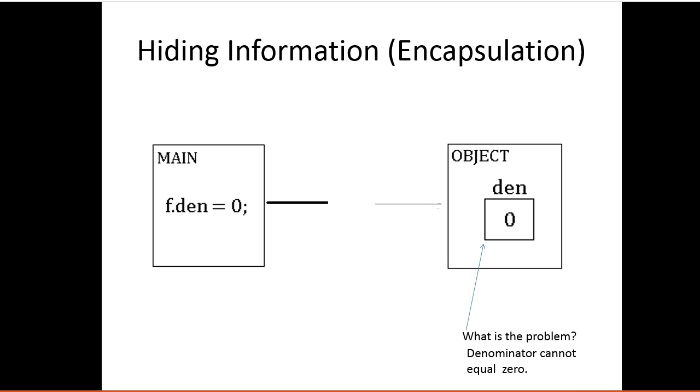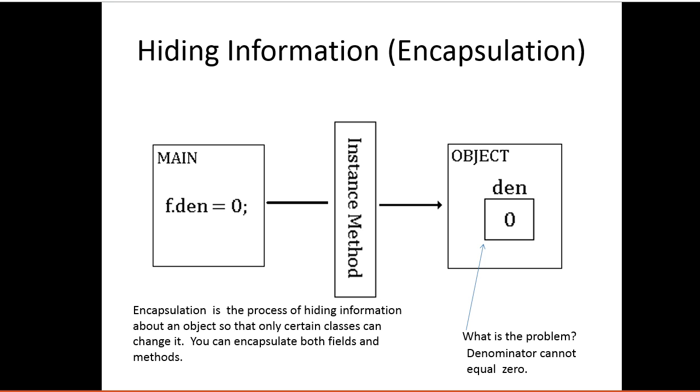What we do is we put an instance method in between. And so that instance method is going to manage any changes to the object's fields. So encapsulation is a process of hiding information about an object so that only certain classes can change it. You can encapsulate both fields and methods.